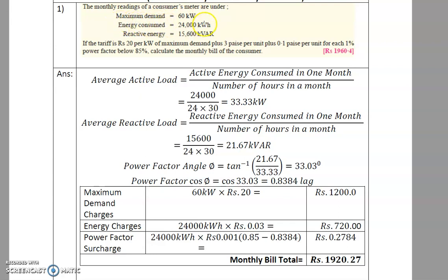The maximum demand is 60 kW, energy consumed is 2400 kWh, and reactive energy is 15600 kVAr. The tariff is rupees 20 per kW of maximum demand, plus 3 paise per unit, and 0.1 paise per unit for each one percent power factor below 85%. This is a power factor type tariff.